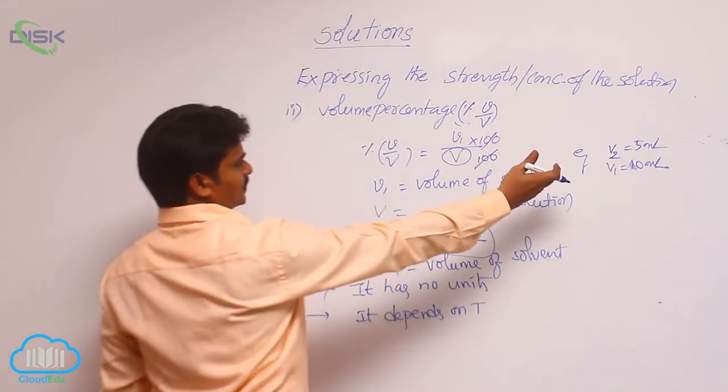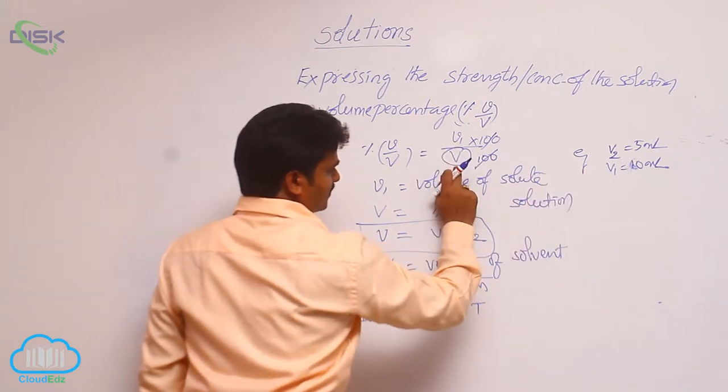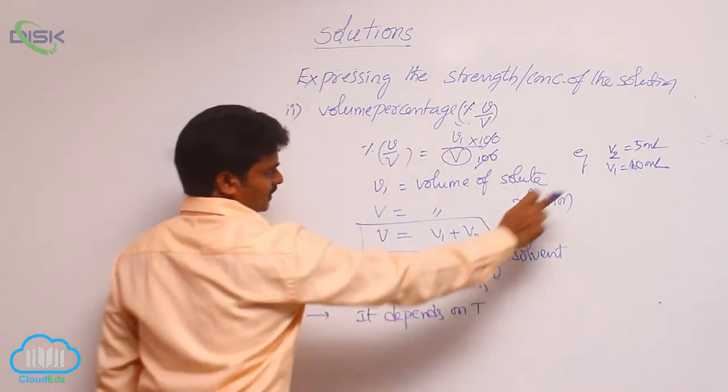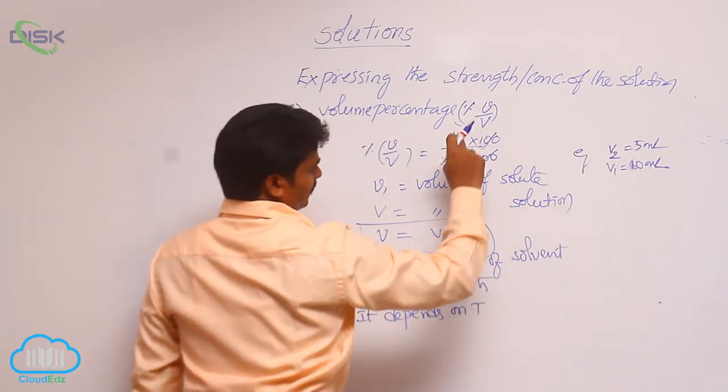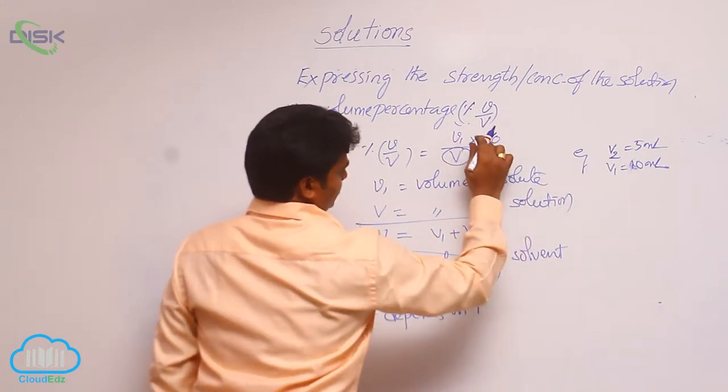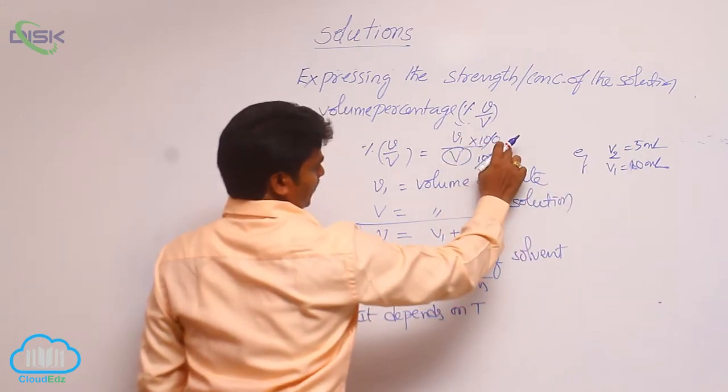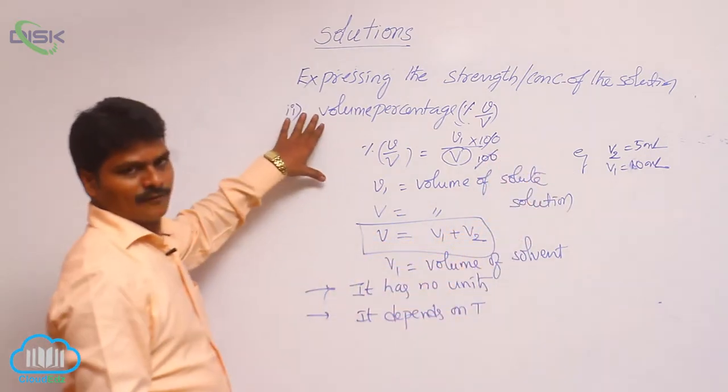So for that substitute their values V2 is 5, but V means V1 plus V2, that means 5 plus 10, 15. So 5 by 15 into 100, that means 1 by 3 into 100, 100 by 3 means 33.33, that is volume percentage.